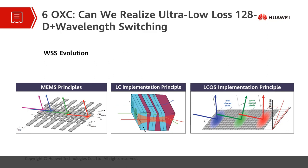The currently mainstream technology is LCOS. LCOS controls phase delay by controlling the cell voltage of the LCOS, so as to form a blaze grating. By changing the period of the grating, a light beam can be diffracted to different angles, thereby implementing optical exchange. The LCOS solution is the third-generation ROADM technology. The biggest difference between LCOS and the other two is that it can support flexible grid function — variable channel widths and super channel technologies are supported by LCOS.